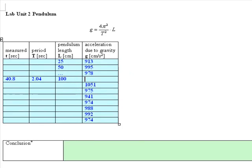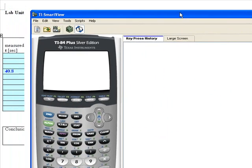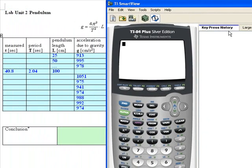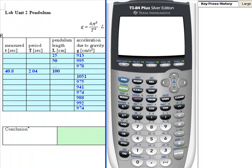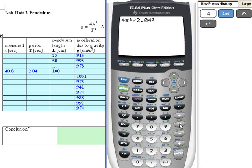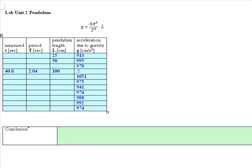And now I'm gonna plug those two numbers into the calculator, and it's going to say that I have 4 pi squared divided by the period is 2.04 squared times the length of 100 centimeters. And I come up with 949 centimeters per second squared. So that's how I would do the calculation.